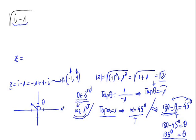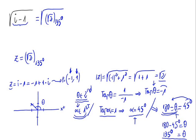Let's write this complex number in its polar form. It would be the modulus, the square root of 2, sub the argument 135 degrees. So the square root of i minus 1 is the same as the square root of the square root of 2 sub 135 degrees.